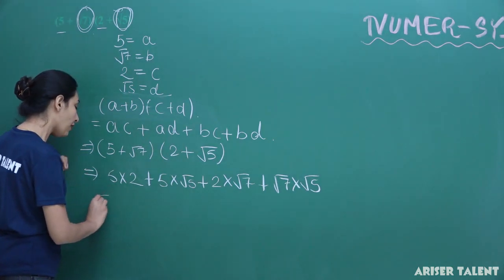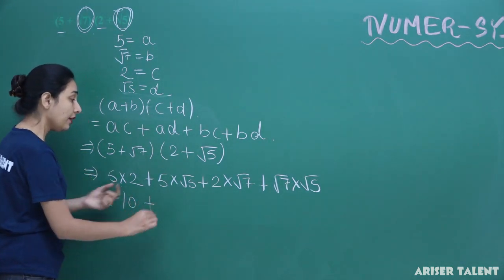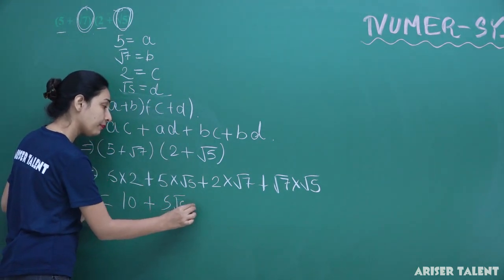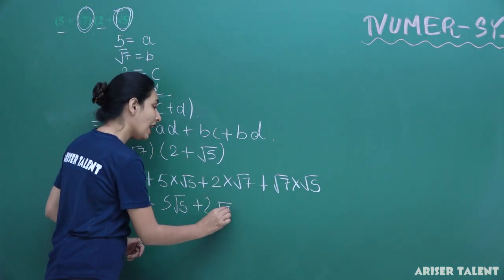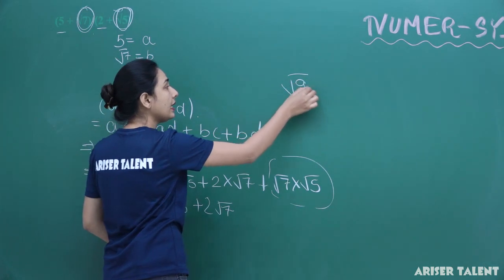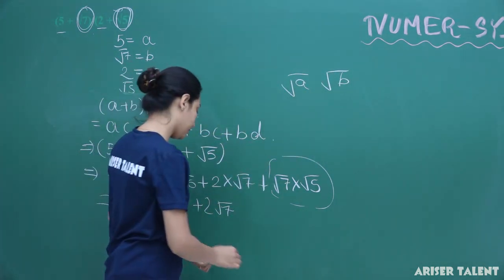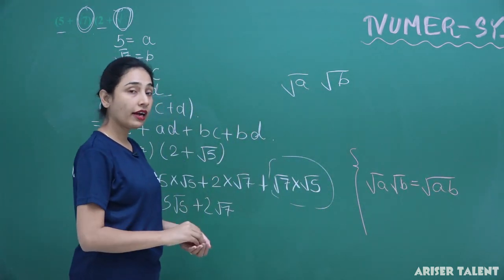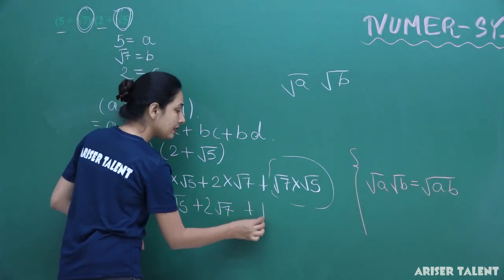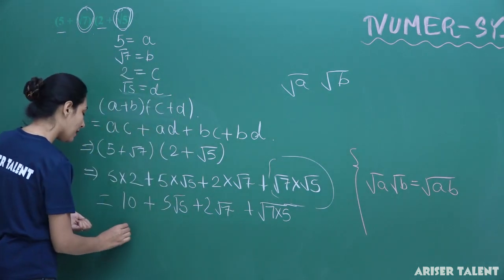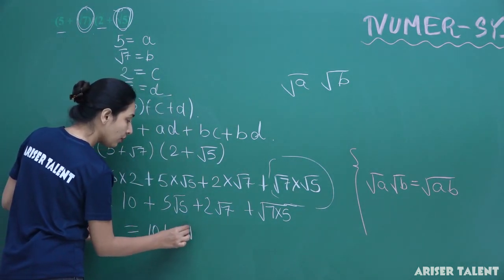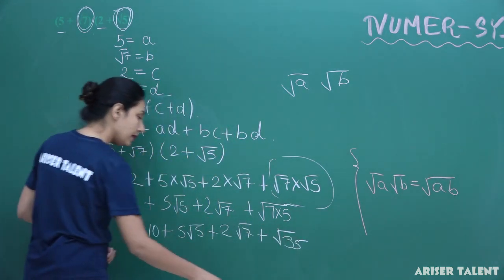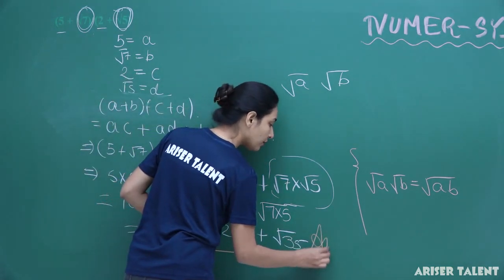Now look carefully — 5 multiplied by root 5 is simply 5 root 5, plus 2 root 7. I am having root a times root b, and root a times root b equals root of a·b — we learned that identity in our previous lecture. So we write: 10 plus 5 root 5 plus 2 root 7 plus root 35. That is our answer for this question.